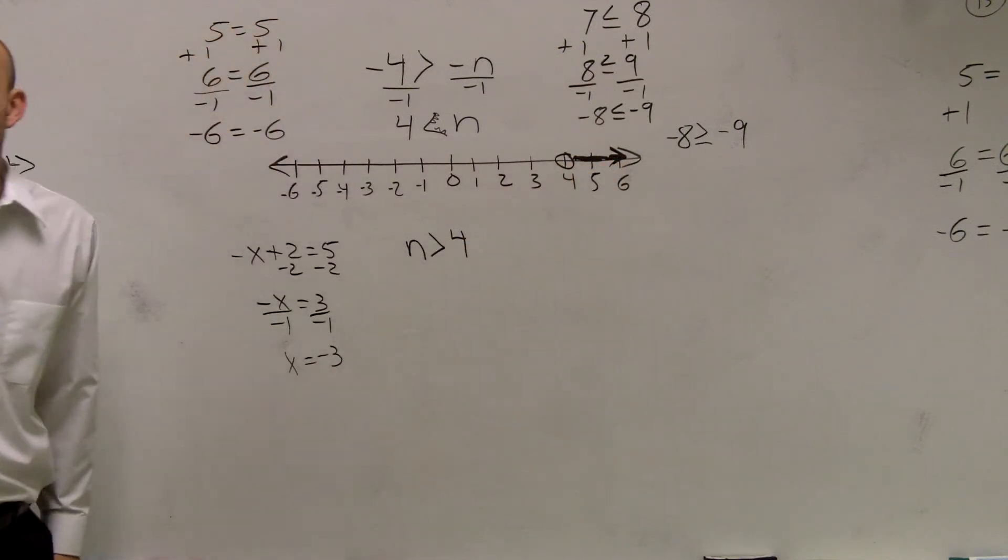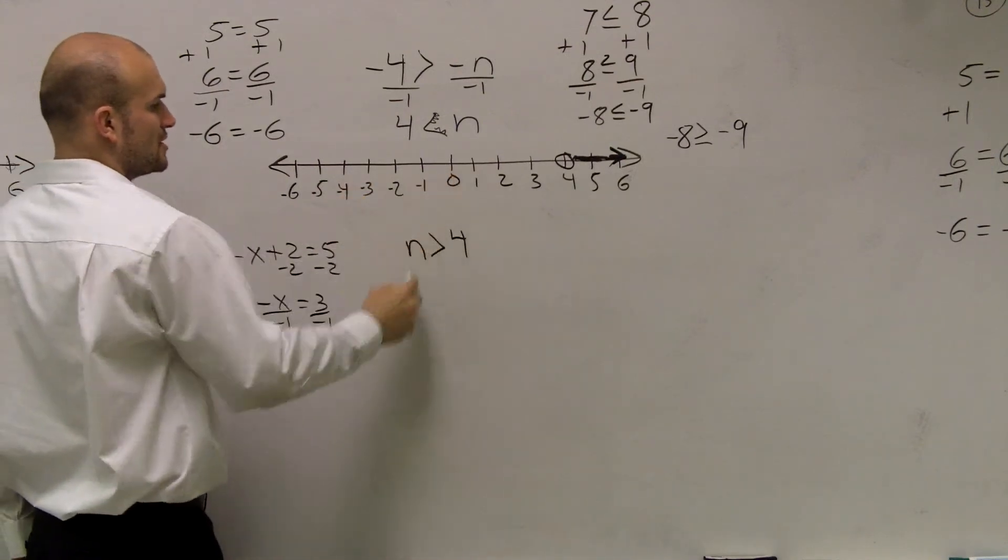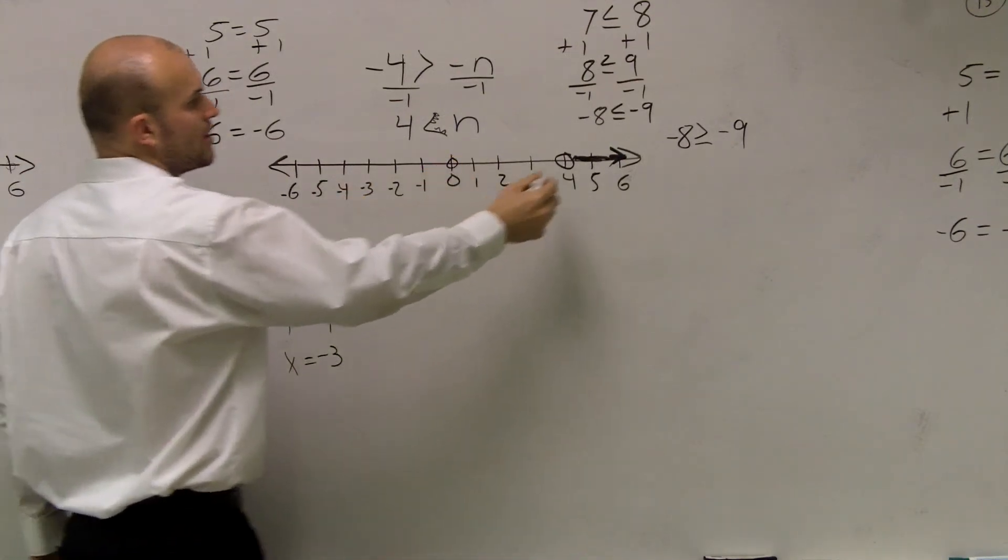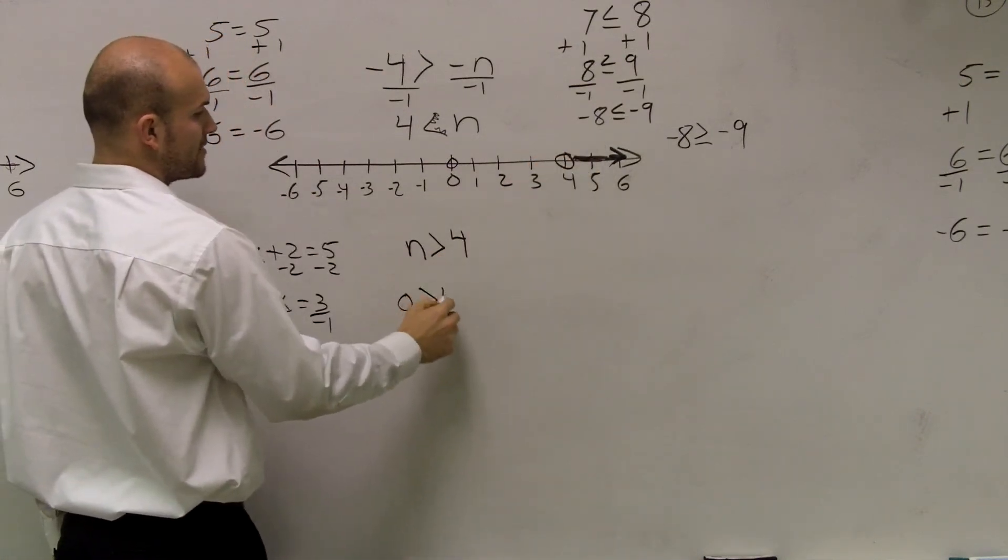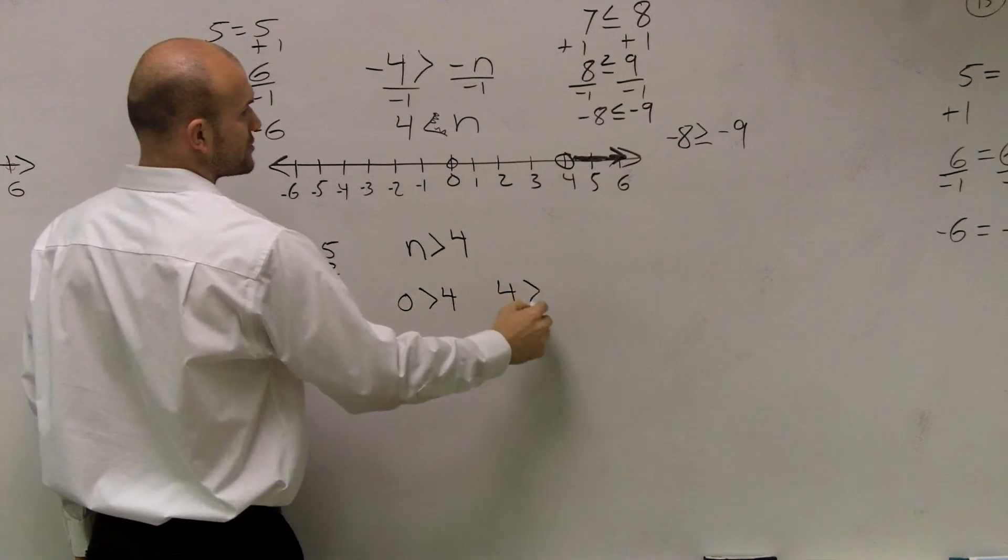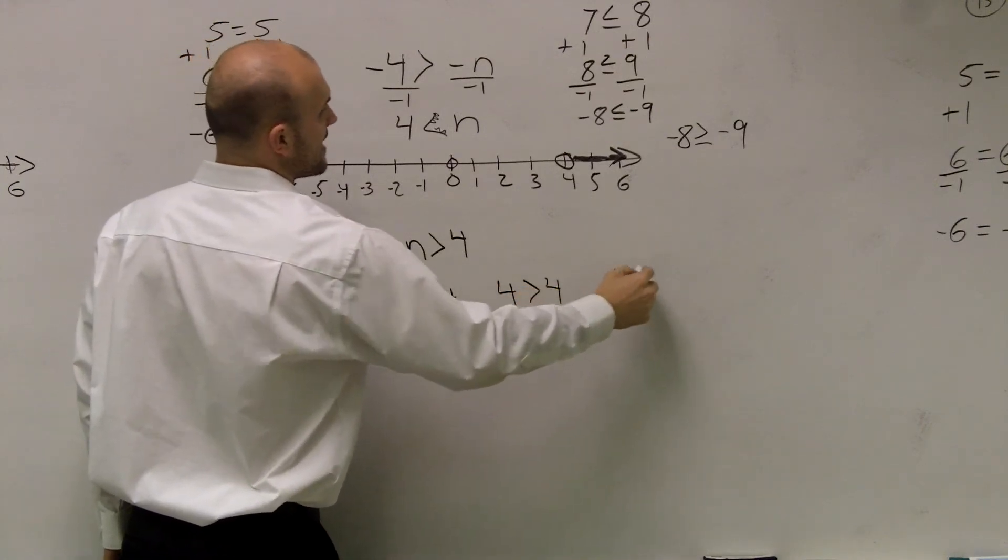Or if you're like, I'm still not that good at doing it in my head, so let me do my test points. You say, I'm going to pick 0, 4, and 5. So you say 0 is greater than 4, 4 is greater than 4, and 5 is greater than 4.